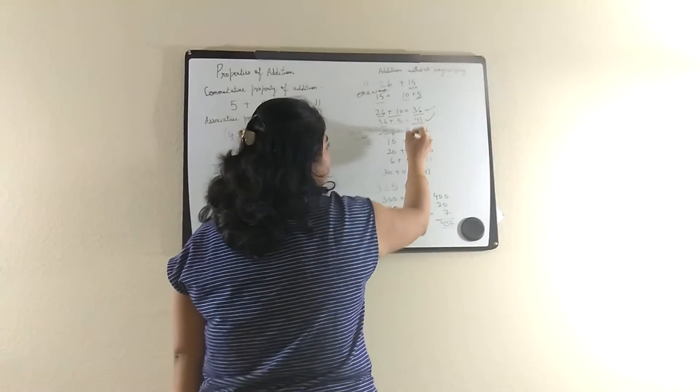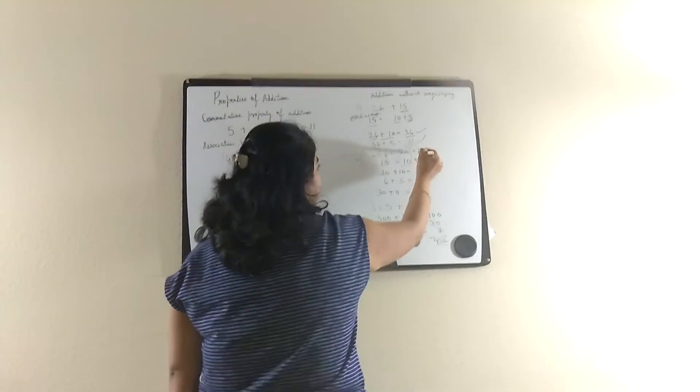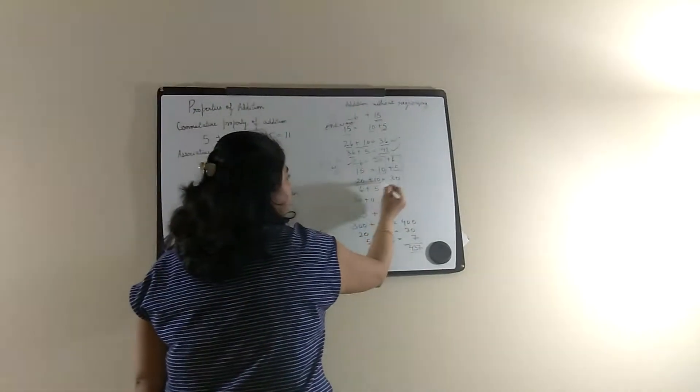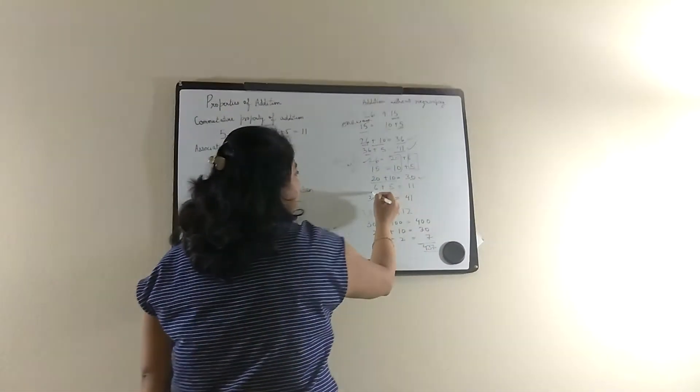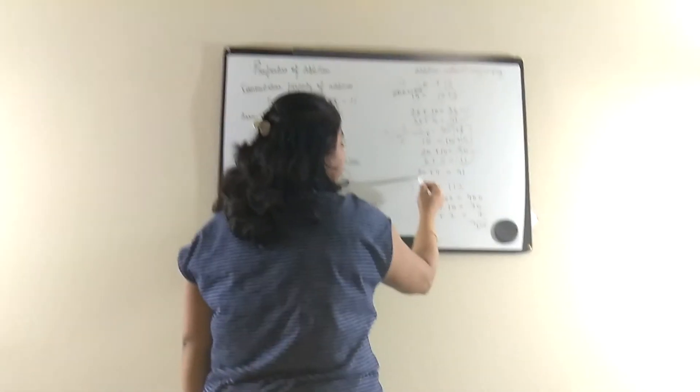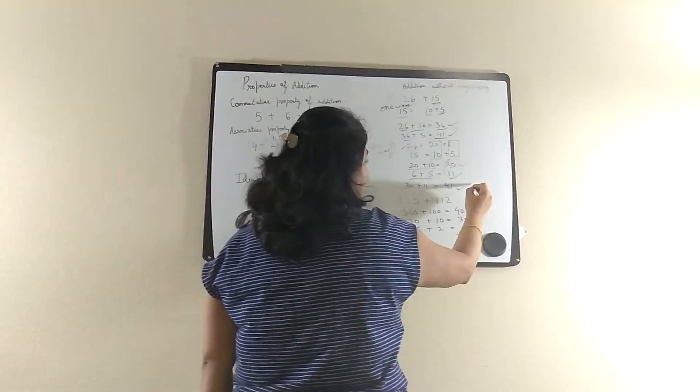So now we have to add the tens and then add the ones. So 20 plus 10 will be 30. 6 plus 5 will be 11. And then you add both of them. So 30 plus 11, that will be 41.